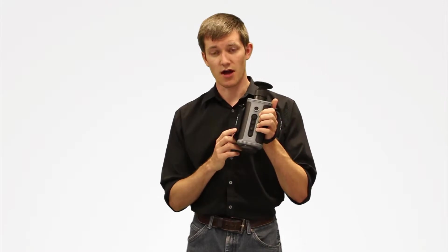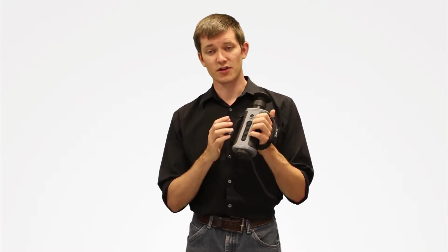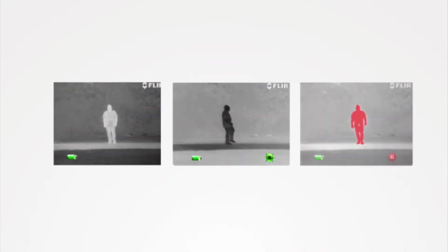All your controls are along the top, so you've got your power, your brightness adjustment for the screen, and you've also got your polarities there. You can choose between white hot, black hot, or four levels of Instalert.